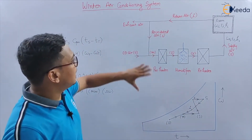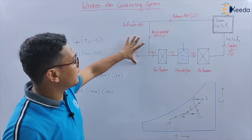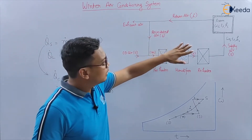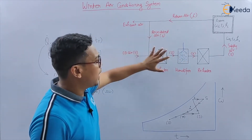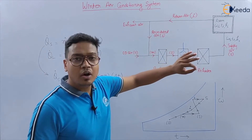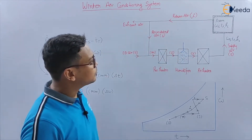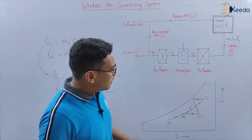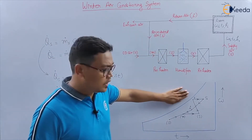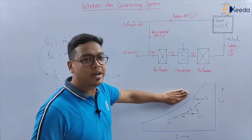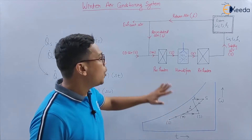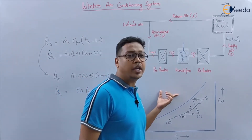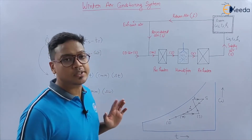Friends, this is the winter air conditioning system diagram. I will explain one by one all the processes, and all the processes have been drawn on the psychrometric chart. This is the winter air conditioning system psychrometric chart or psychrometric processes.